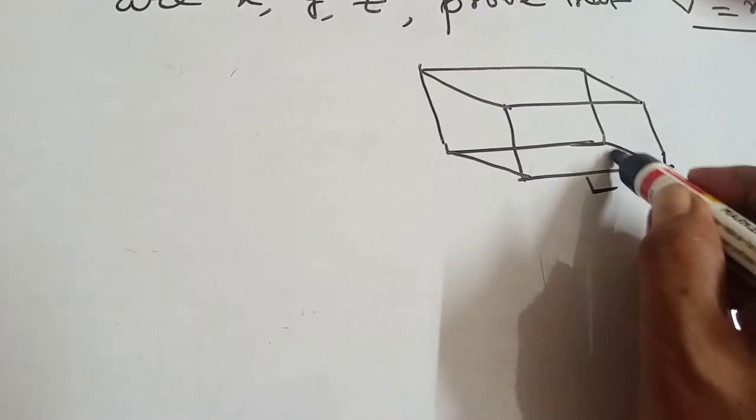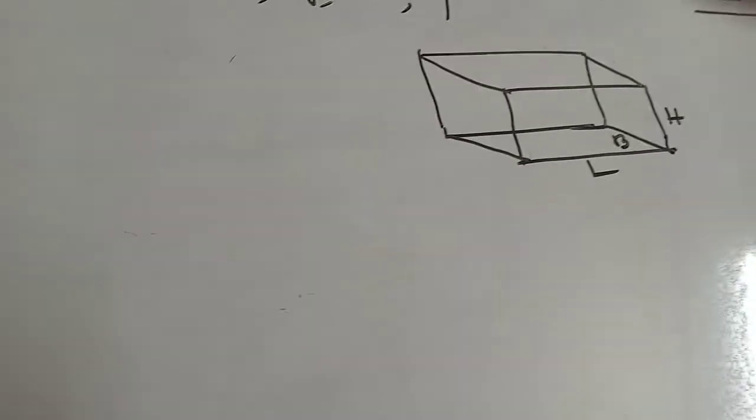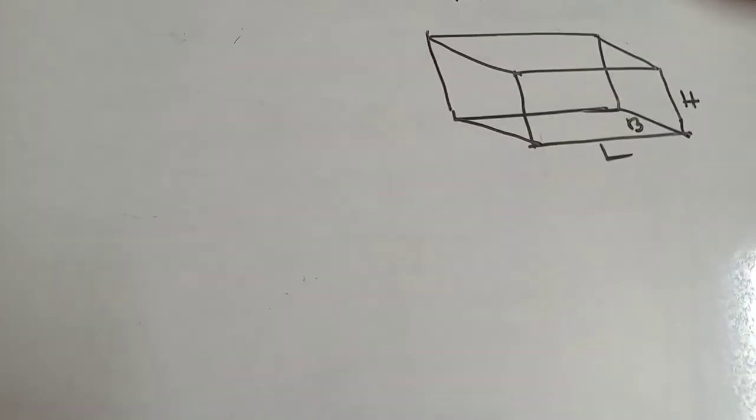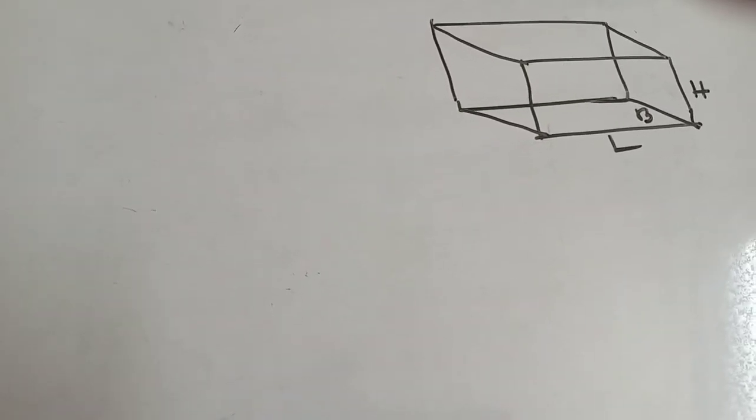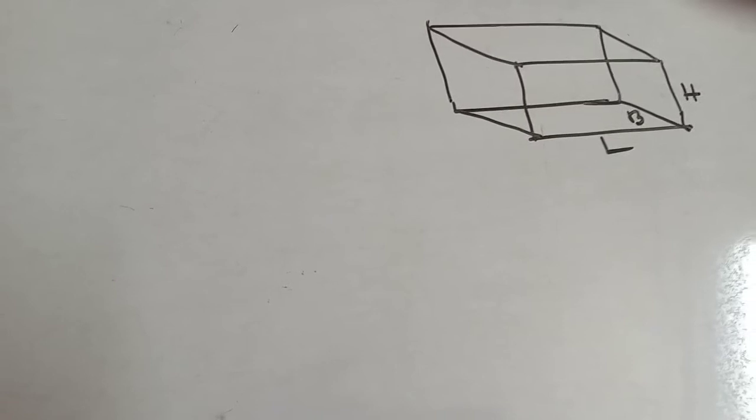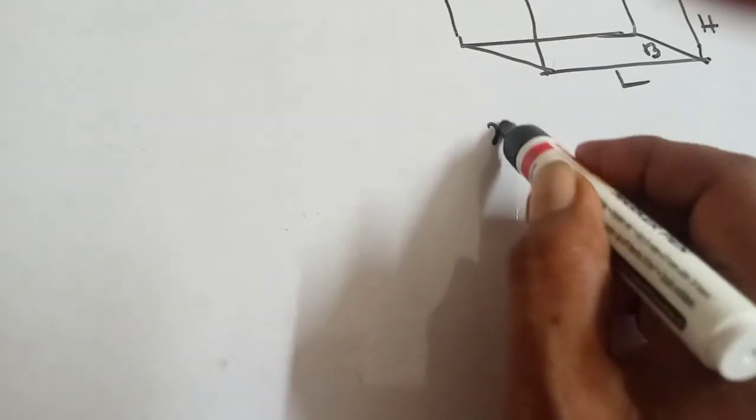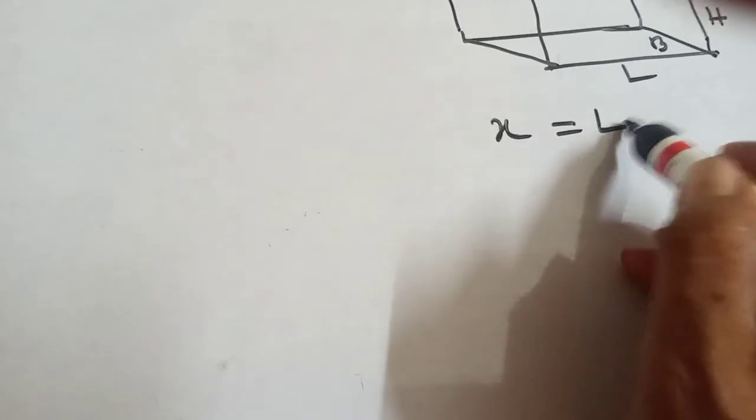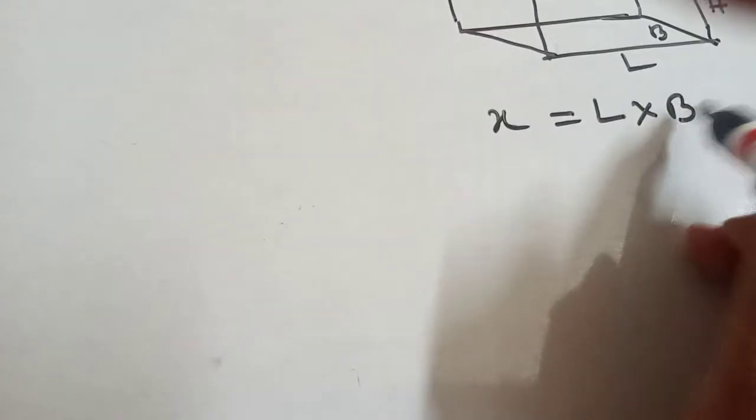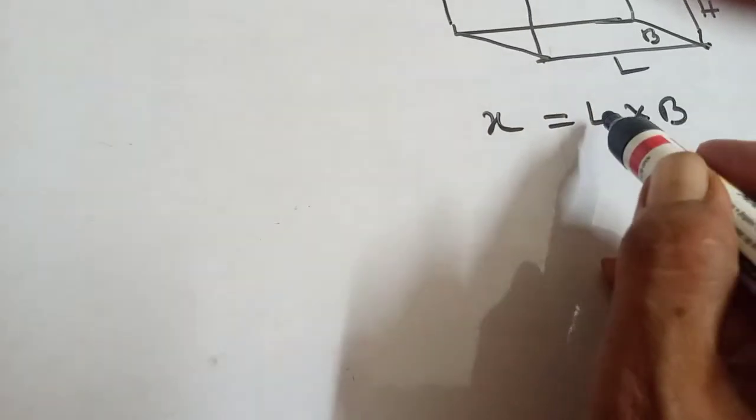This is length, this is breadth, and this is height. Three faces area is x, y, z, and each face is rectangular. That means x equals length into breadth. Area equals length into breadth. This is one face, area of first face.